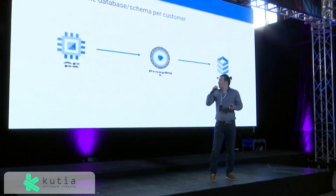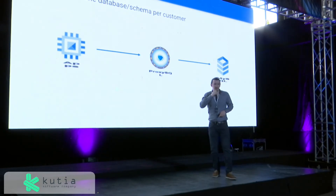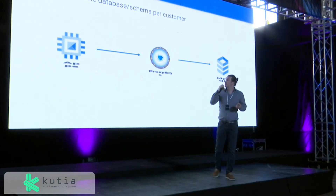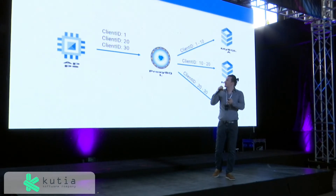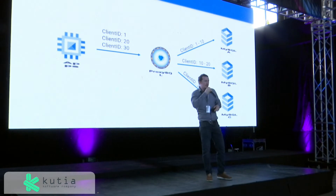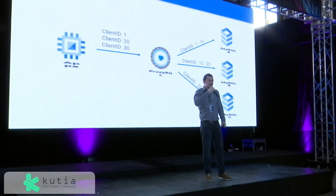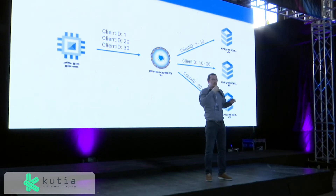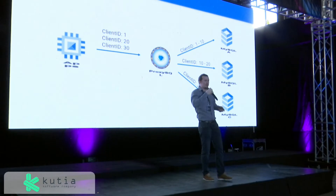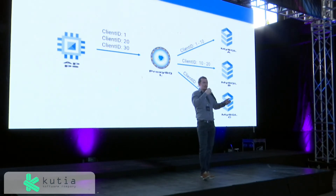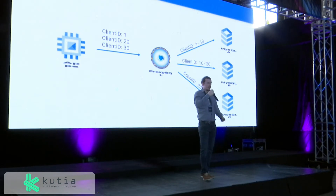One of the best features of ProxySQL is sharding — having one database or schema per customer. A common question is: how do you design a database when you have many customers? If you create one database per client, eventually you'll run out of memory and capacity as you reach millions of users, because a single MySQL server can't support billions of databases.